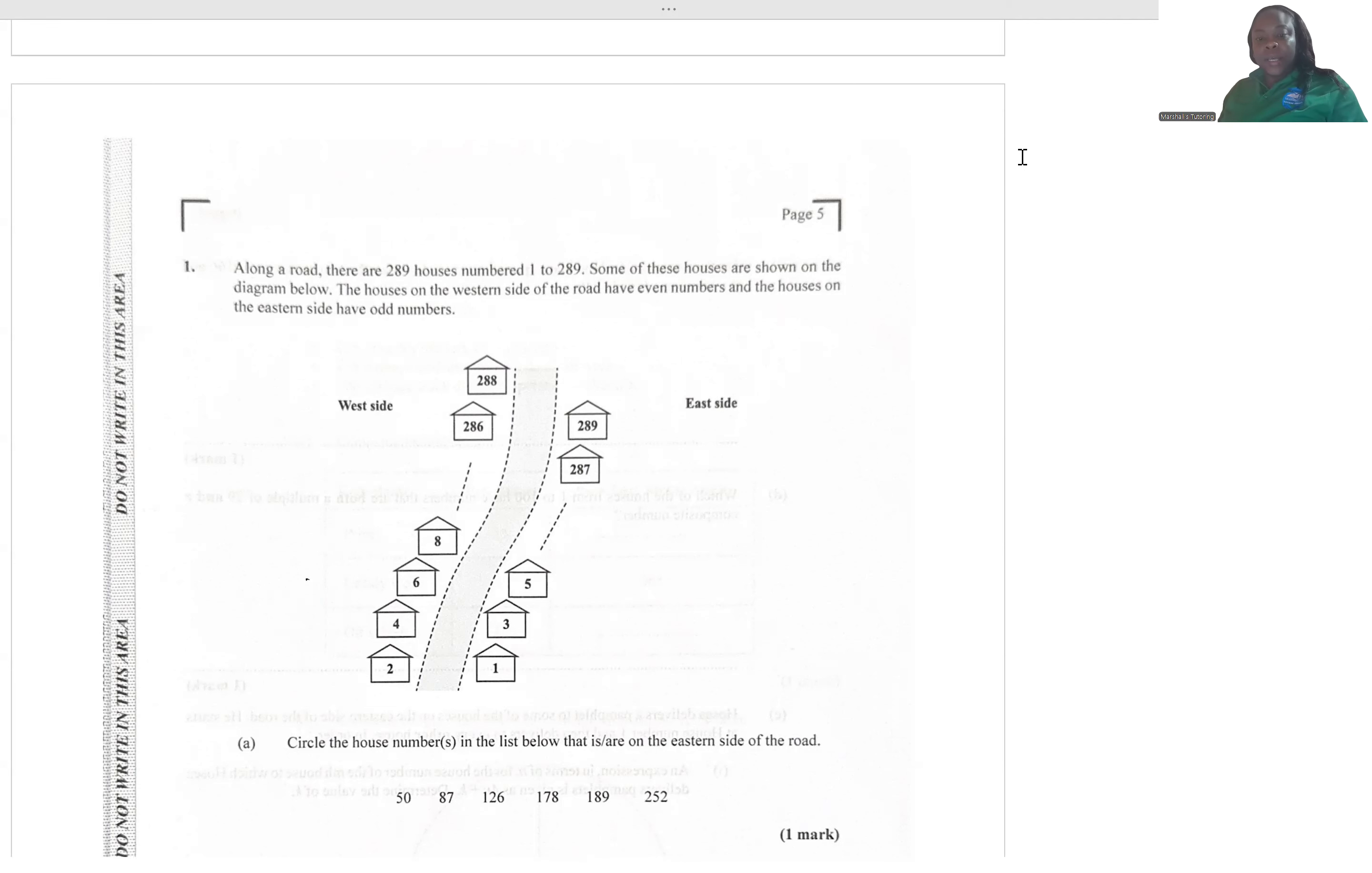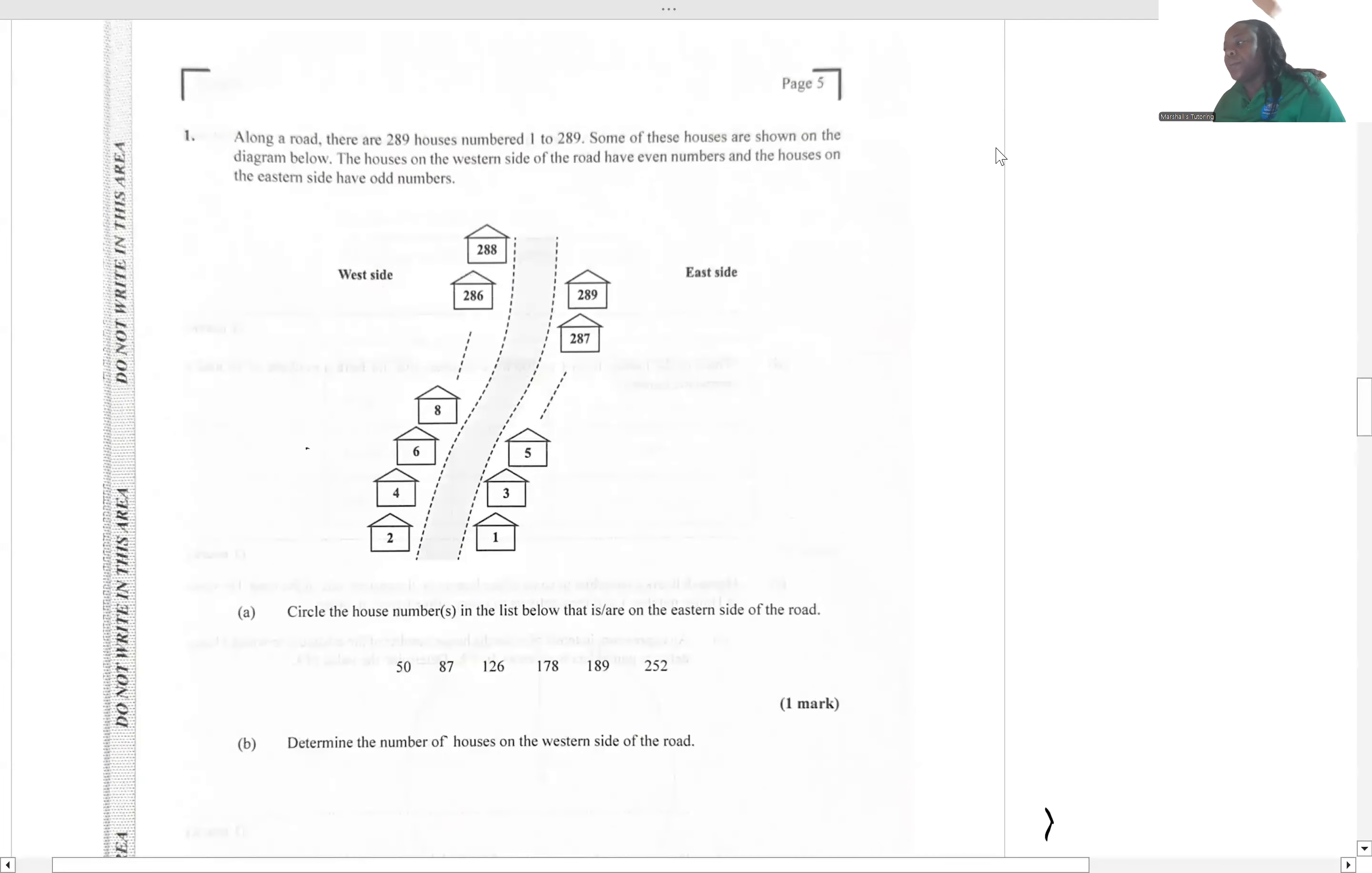So the first question gives us a map. They show us a road with 289 houses numbered 1 to 289, and we have the western side and the eastern side.